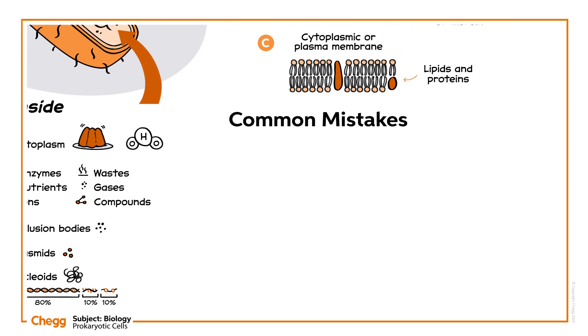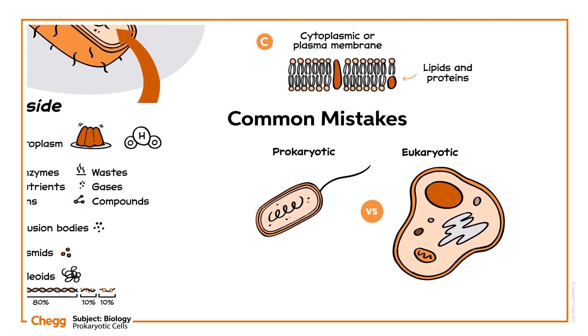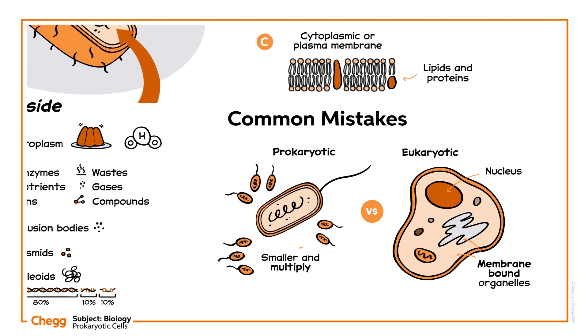Make sure you don't confuse prokaryotes with eukaryotes. A main point of difference is that prokaryotes lack a well-defined nucleus and membrane-bound organelles. Prokaryotes are generally smaller and multiply faster too.